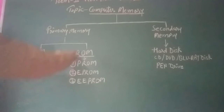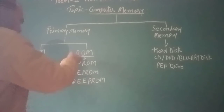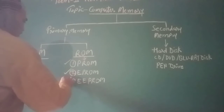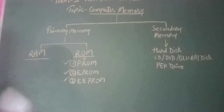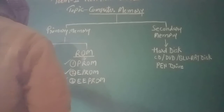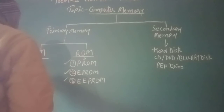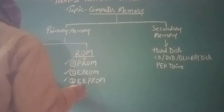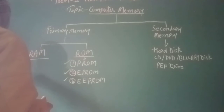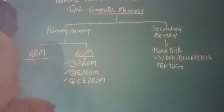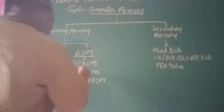Now, Read-Only Memory — ROM — is classified into three categories: PROM, EPROM, and EEPROM. ROM means Read-Only Memory. It is a type of memory from which you can only read the information stored in it but cannot write on it. That means the instructions stored in ROM cannot be changed. The information is permanently stored in it, and data is not lost even when the power is turned off. Therefore, it is known as non-volatile memory.